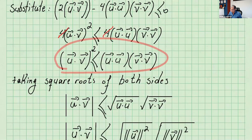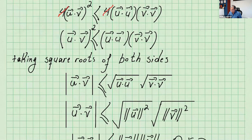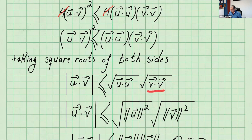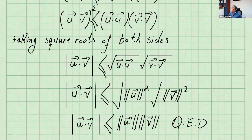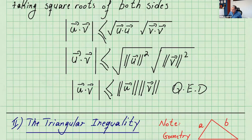Now if we take the square root of both sides, since we take square root we have to write absolute value. So absolute value of u dot v becomes square root of (u dot u) times square root of (v dot v). But u dot u is just the norm of u squared, and v dot v is just the norm of v squared. So taking the square root removes the squares, and we get absolute value of u dot v ≤ norm of u times norm of v. And that's the Cauchy-Schwarz inequality.